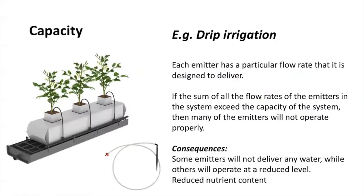Capacity. Using drip irrigation systems as an example, we need to understand that our irrigation system needs to have enough capacity to meet the needs of water movement and nutrient delivery. Each emitter has a particular flow rate that it is designed to deliver. If the sum of all flow rates from the emitters exceeds the capacity of the system, then emitters won't be able to deliver the same amount of water to the plants, reducing also nutrient delivery.